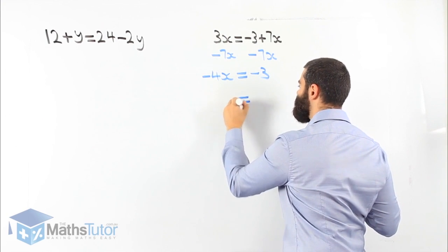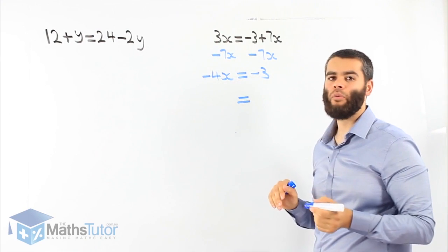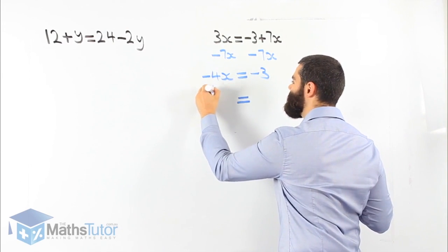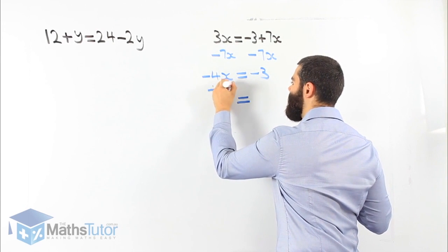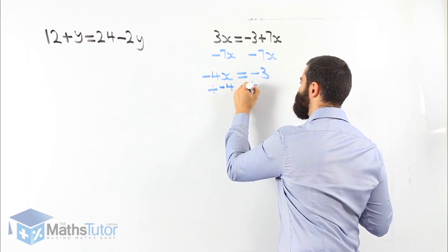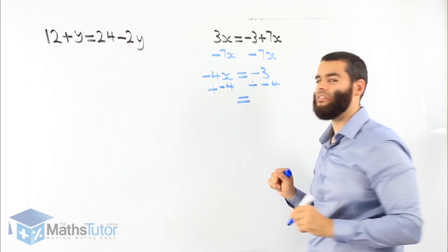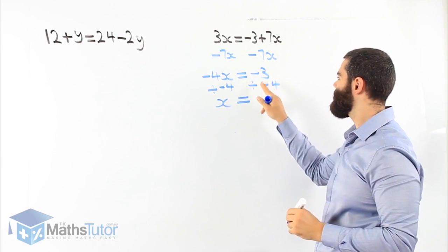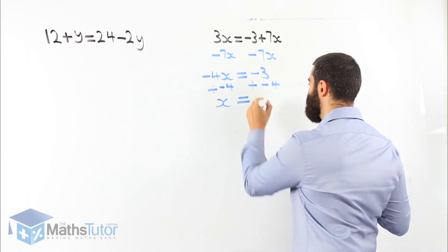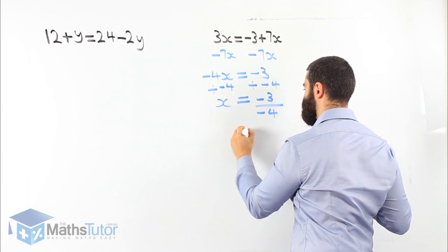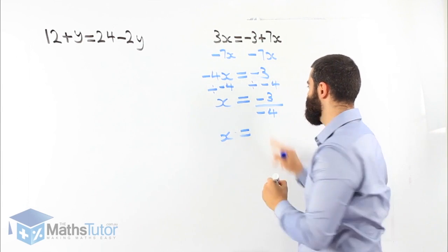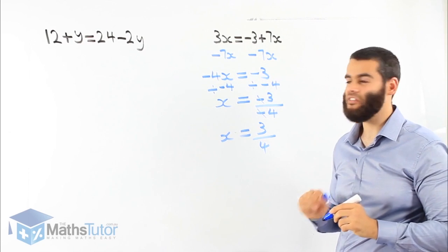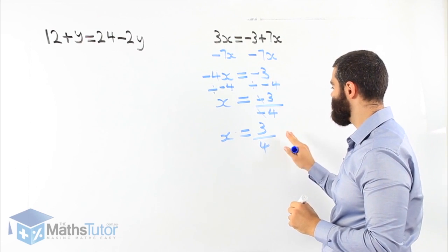We only want x. Negative 4x is the same as negative 4 times x, so the opposite is divide by negative 4. Divide by negative 4 on both sides. Negative 4 divided by negative 4, we're left with 1x. And negative 3 divided by negative 4 — the negatives cancel out — our answer is simply 3 quarters. Very easy and simple to understand.